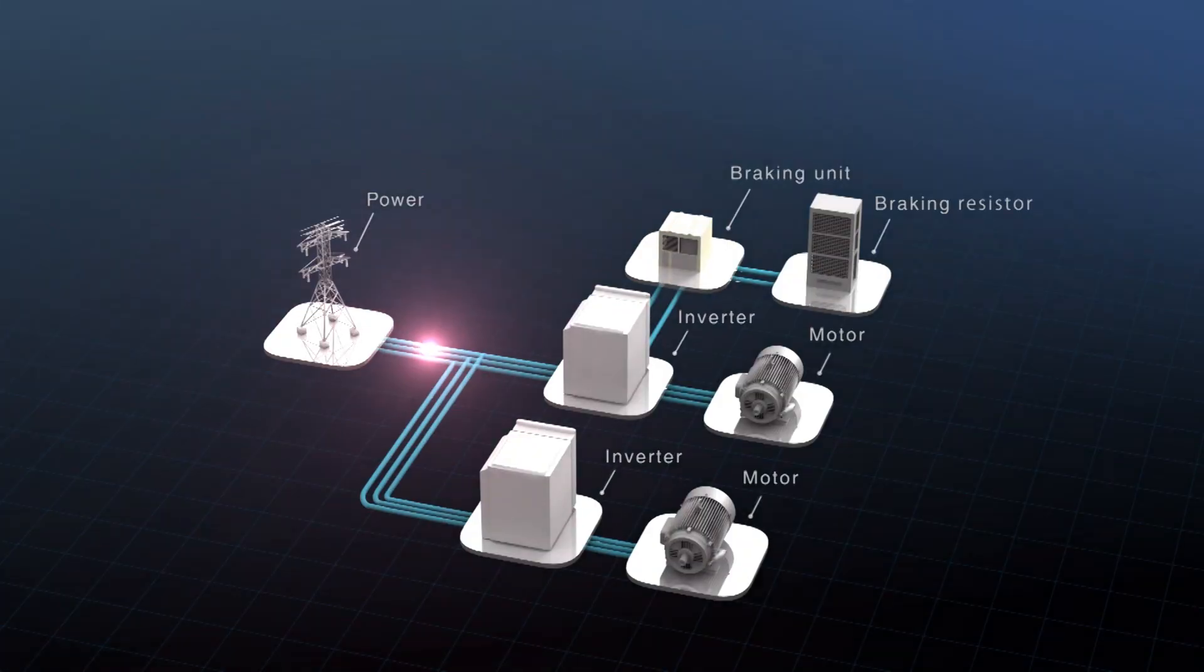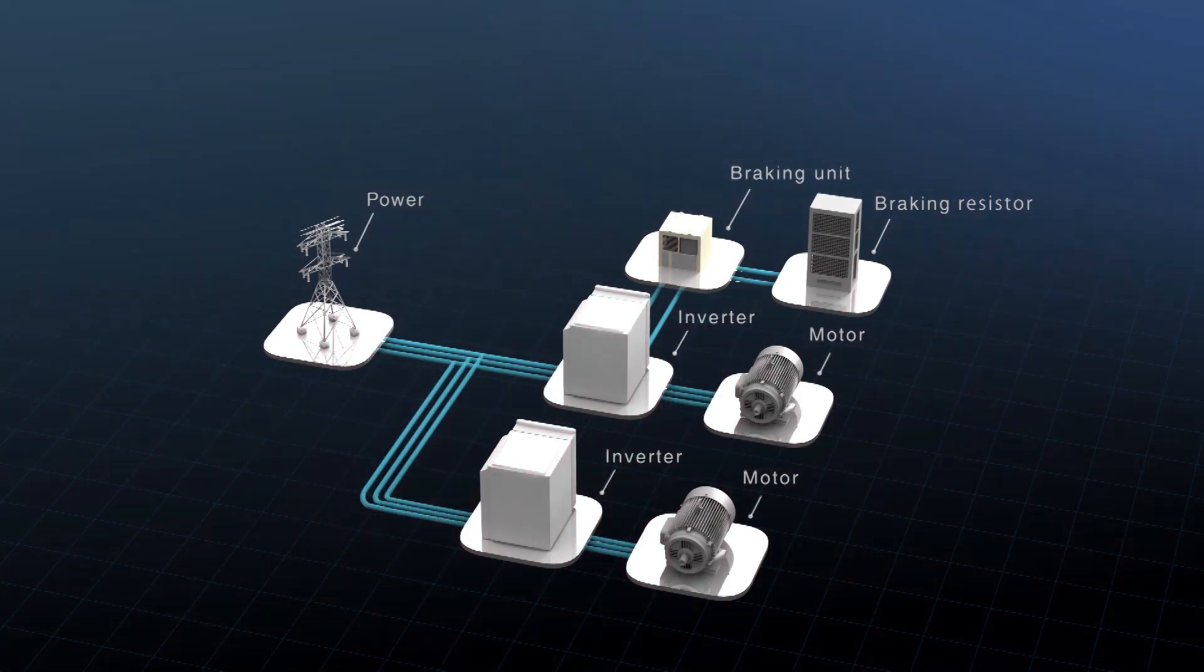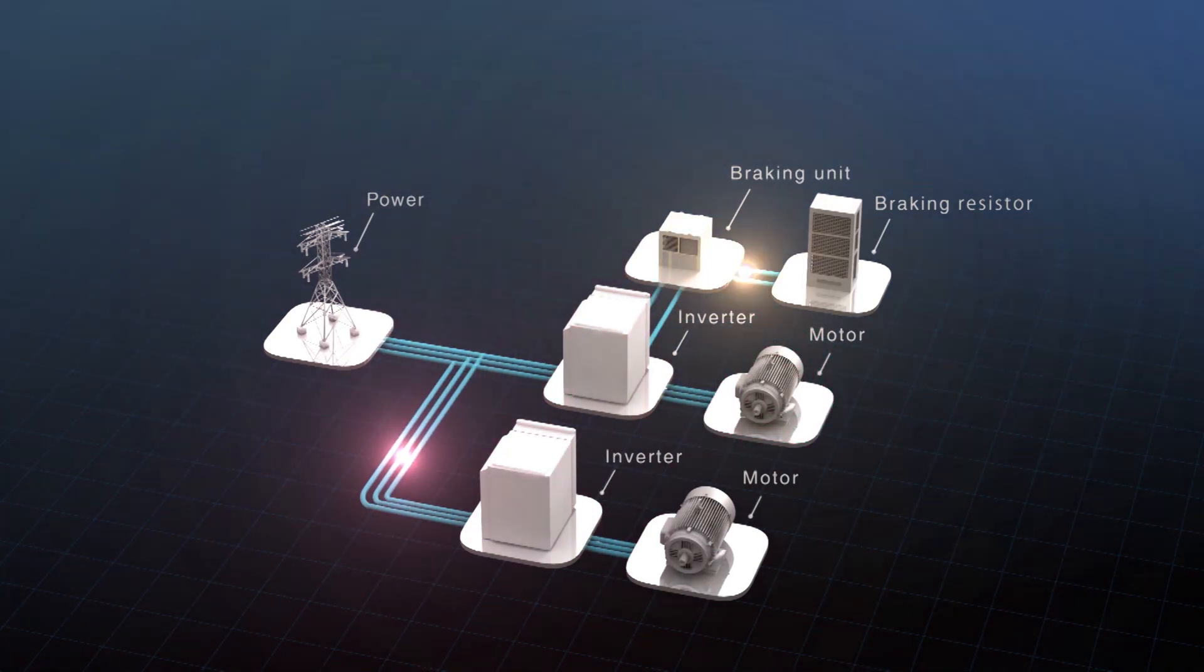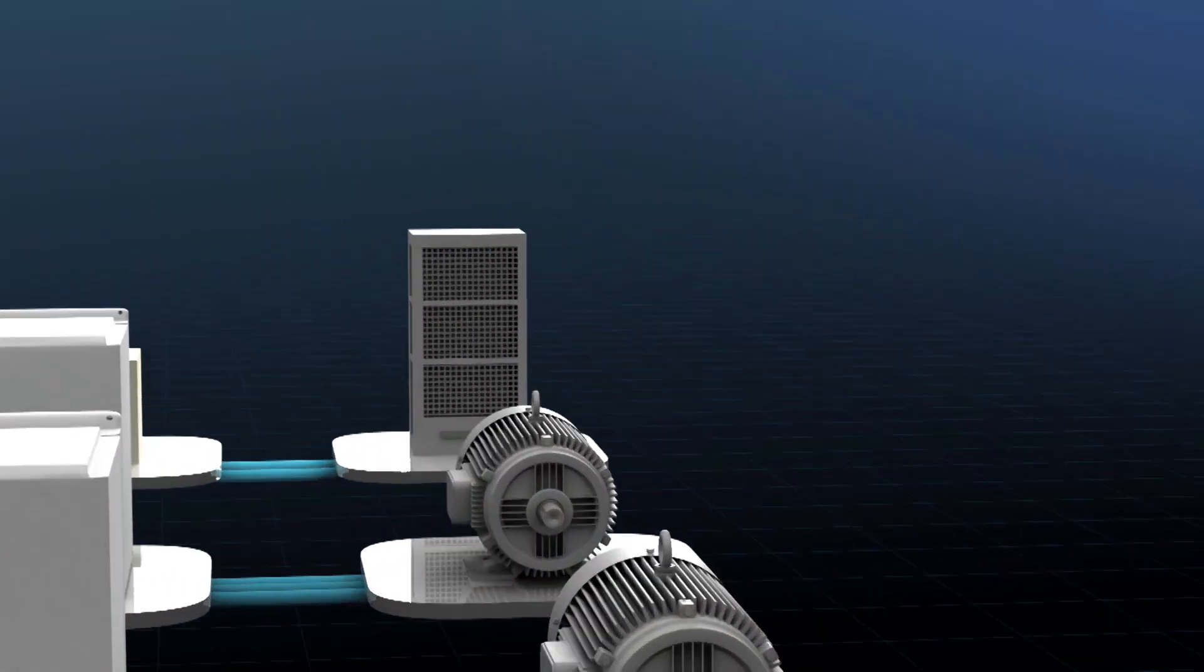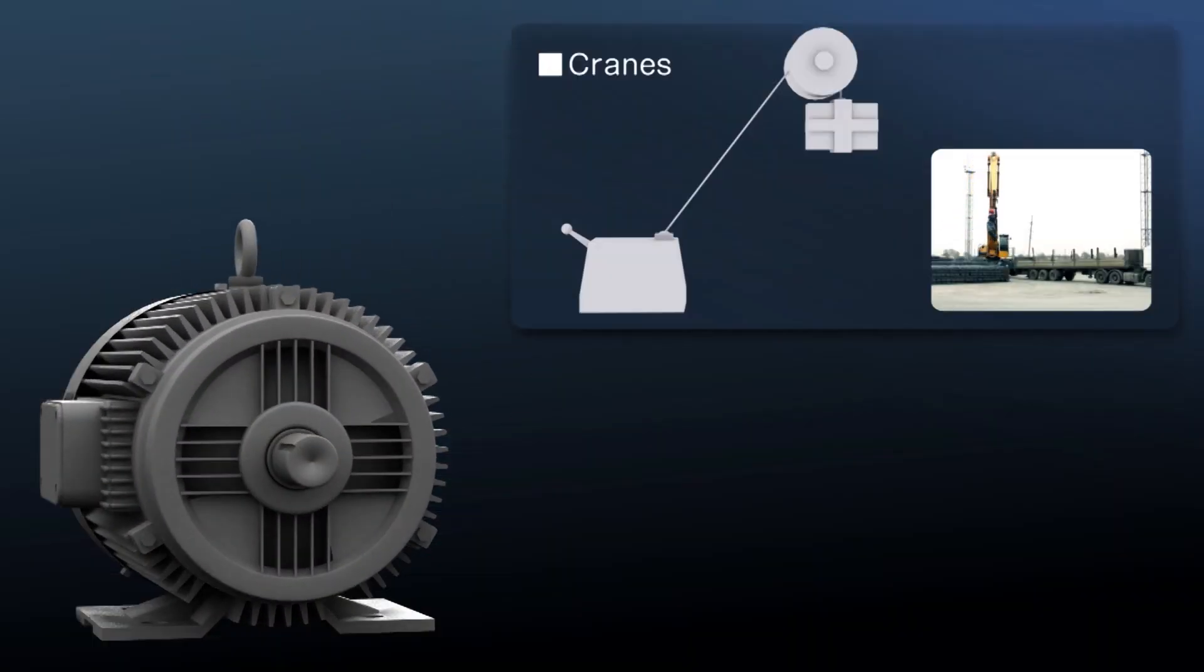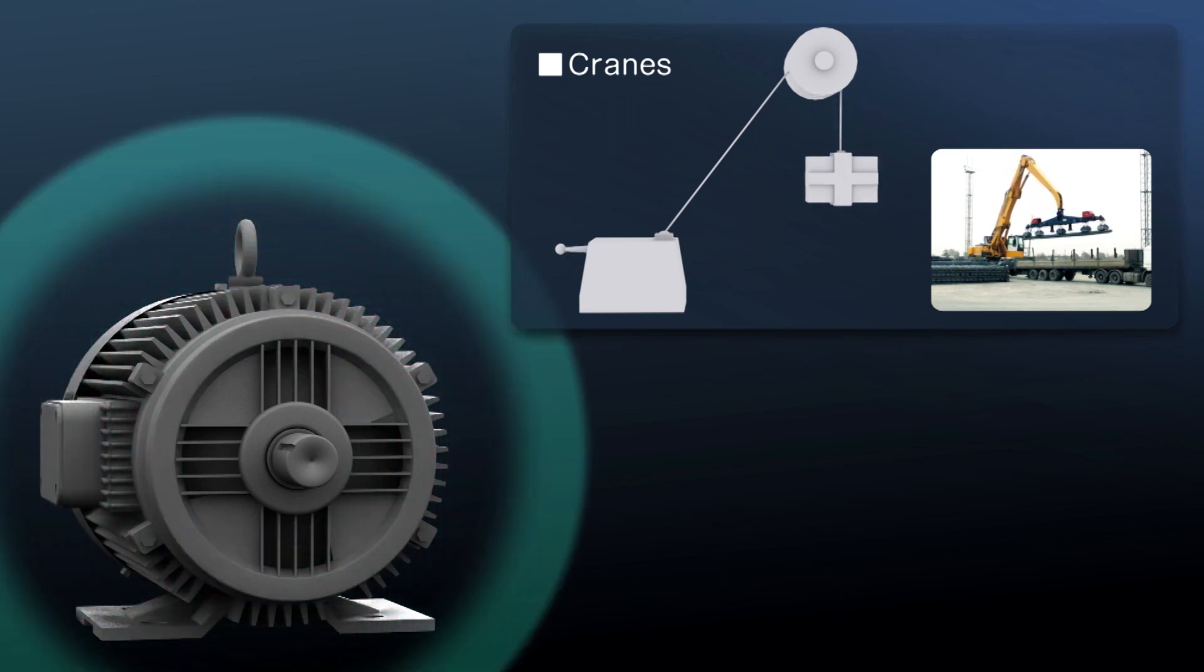Motors normally consume energy, but sometimes energy flows backwards when a motor shaft is turned by an external force. For example, a lifting application such as a crane consumes energy when the load is lifted up.